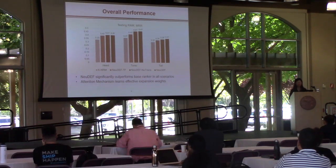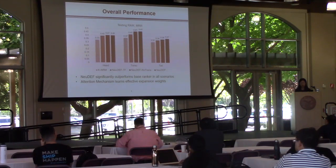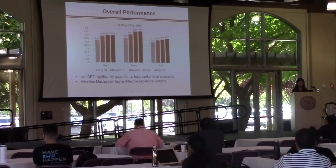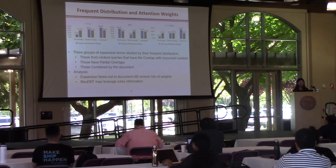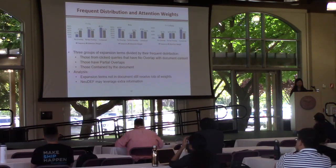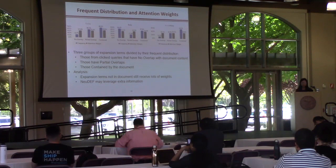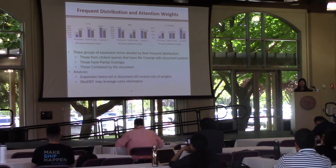Here are the performance results of our base ranker KNRM and the values of our model UDAF. Our full model UDAF and its ablation versions significantly outperform the base ranker. The attention mechanism learns effective expansion weights and plays an important role in our model. We also find that even expansion terms not in the original document representation still receive significant attention weights, which means our model UDAF may leverage extra information that is extremely helpful for search performance improvement.